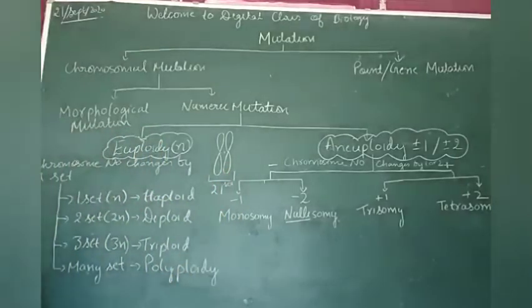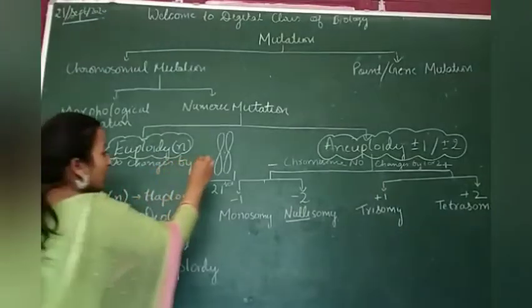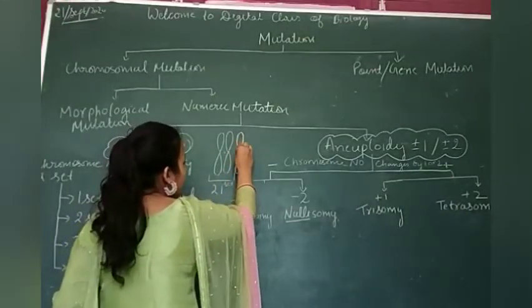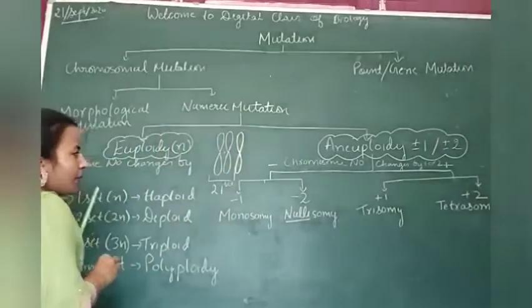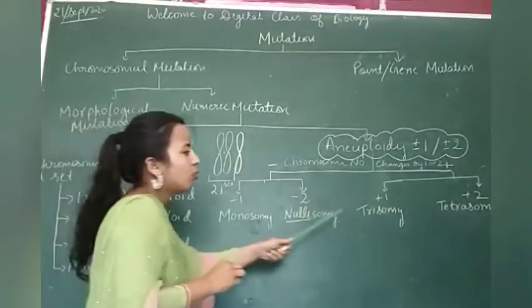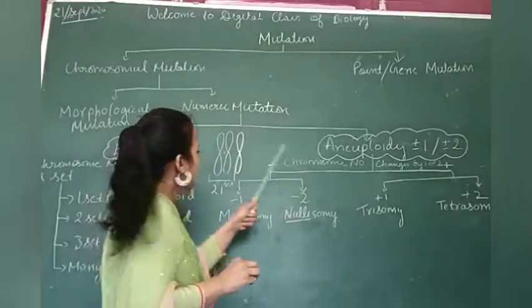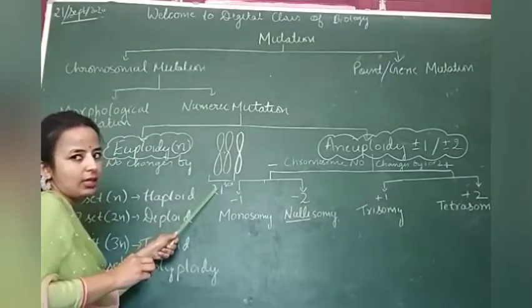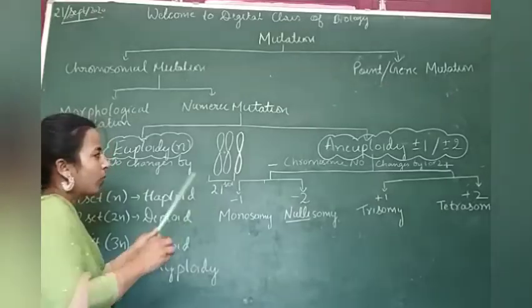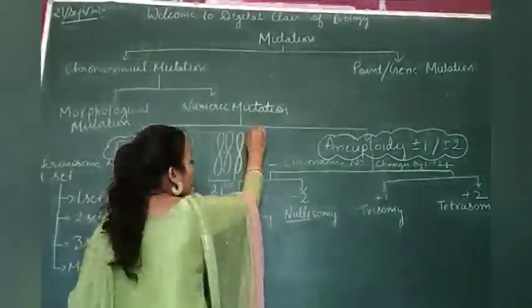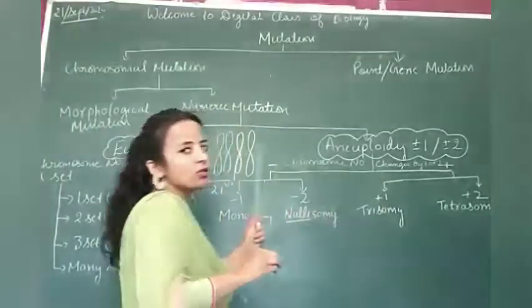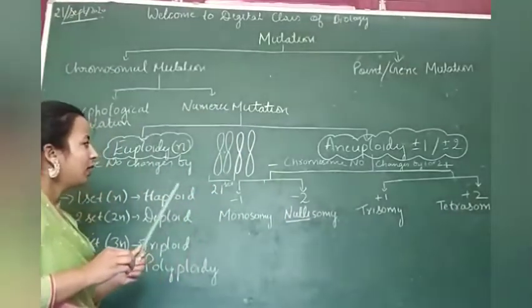Here, if one extra chromosome is added by mutation, what would happen? It will become trisomy. If two chromosomes are added, then it is known as tetrasomy. Understood?